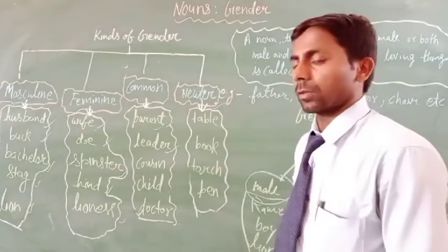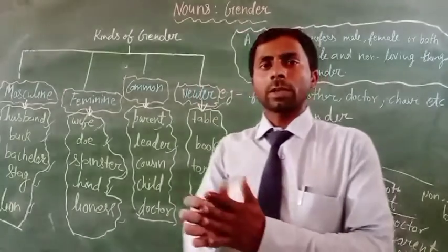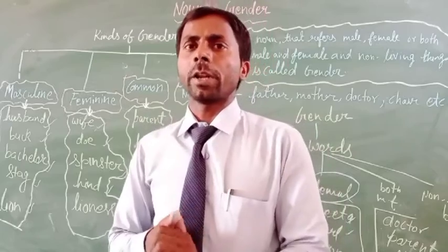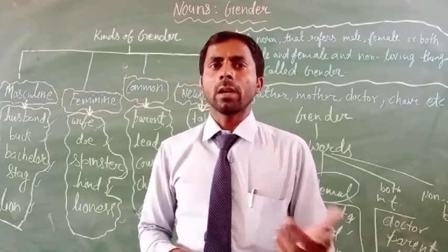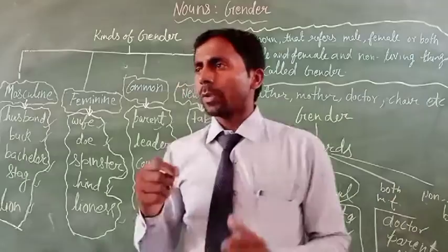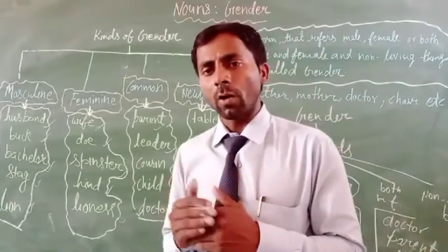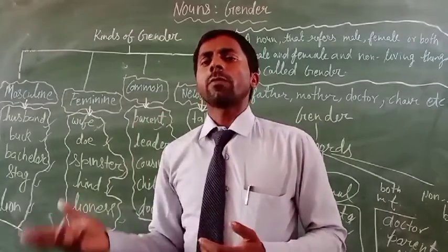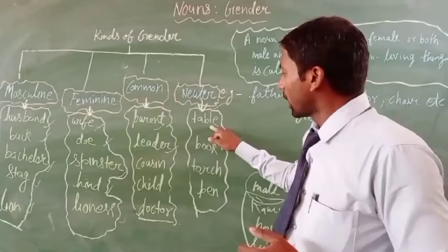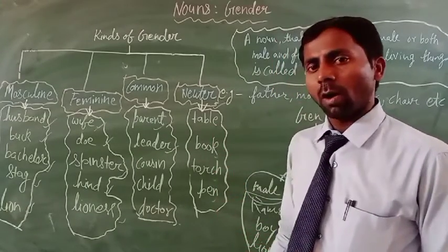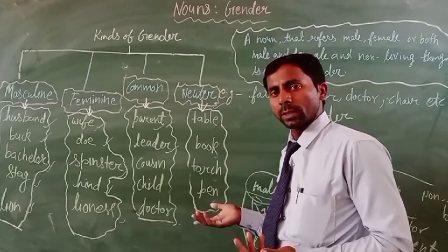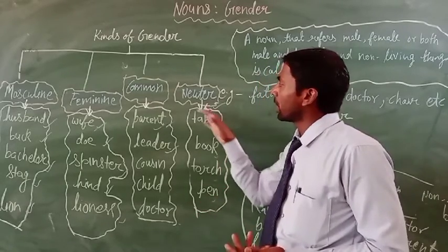The last type is neuter gender. A noun is said to be in the neuter gender if it refers to things that are neither male nor female — normally nouns referring to lifeless objects. A noun word that denotes non-living things is called neuter gender. For example: table, book, thoughts, pain, etc. All these words refer to non-living things, so they are neuter gender.